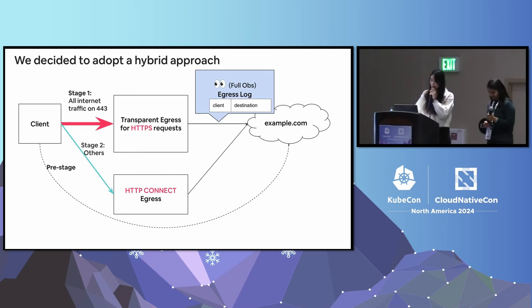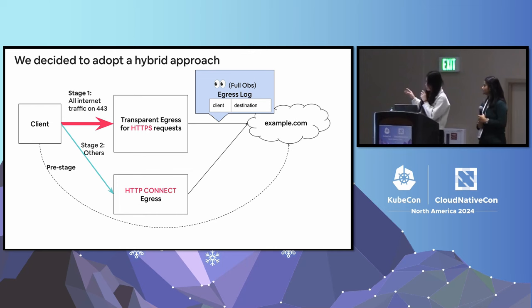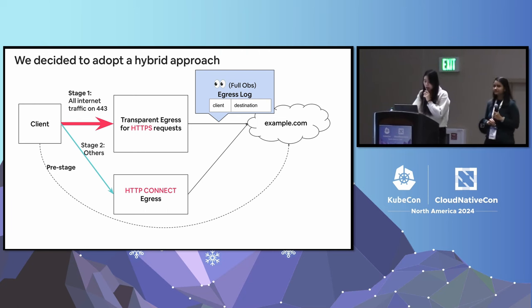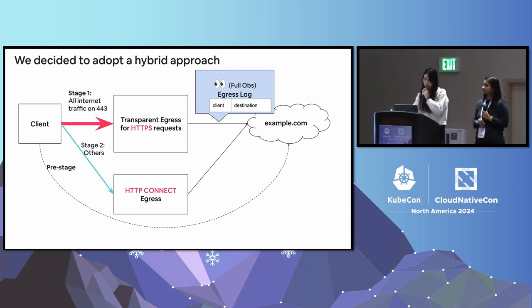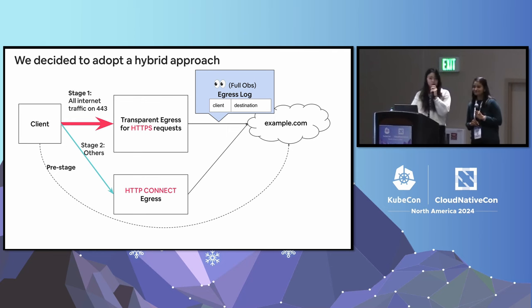Considering the balance of easy migration and use case coverage, our final decision is to adopt a hybrid approach with two stages. Stage one is building the transparent egress for HTTPS and migrating all internet traffic on port 443 to it, so we quickly gain full observability and control over the majority of our outgoing traffic. Stage two is building the HTTP CONNECT egress and migrating remaining non-HTTPS traffic to it. Today's talk focuses on the first stage — transparent egress for HTTPS — and now I'll hand over to Akshita for a deep dive.